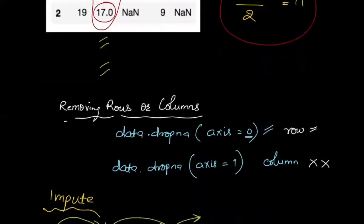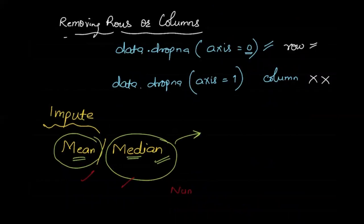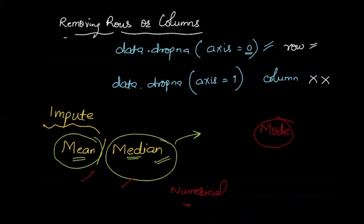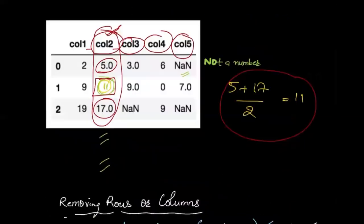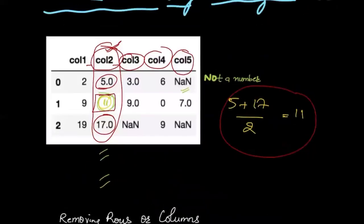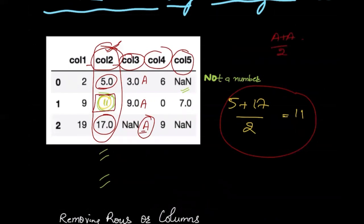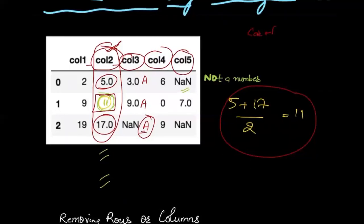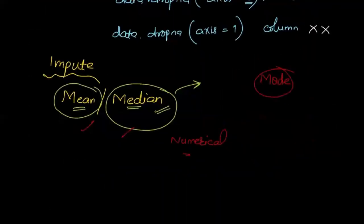Also, mean and median work well with numerical parameters. But if you have a categorical parameter, you can impute those with the help of mode — mode means the most frequent value. For example, if the most frequent value was 'A', you impute 'A' in the missing spot, because you can't calculate mean or median for categorical data. You can't say car plus bike plus truck divided by three equals something meaningful.